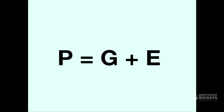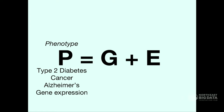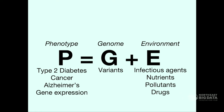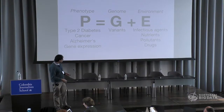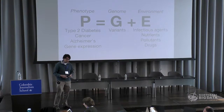Coming from an informatics perspective, we're interested in a lot of omics data as well as environmental data. From a first-order view, we can think of this as a simple equation: P, which is phenotype — data about diseases as well as molecular phenotypes like gene expression — is a combination of genes, genetic information such as genetic variants, as well as environmental information, which is a lot broader. Things like infectious agents, the type of nutrients you intake, your diet, drugs that you take — those are all environmental factors.